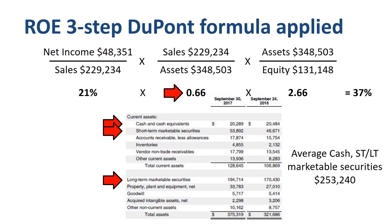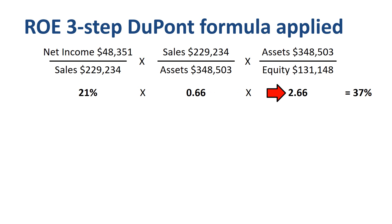That brings us to the last of the three items: leverage. 2.66 is not an unusual number, but you can't really conclude much about this, as a potential distribution of the financial assets to shareholders through dividends, as well as using the money to pay down debt, would significantly impact both the numerator as well as the denominator of the leverage equation. Who knows what a normalized leverage ratio would look like for Apple.